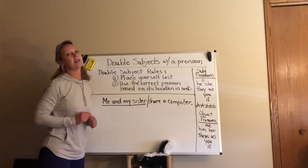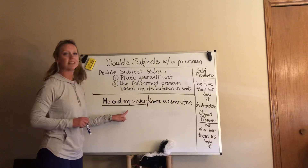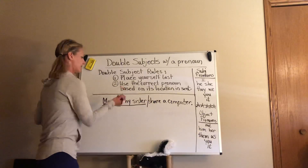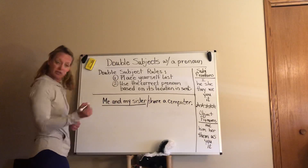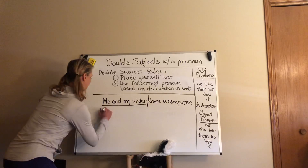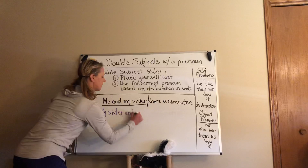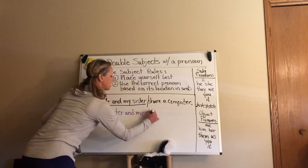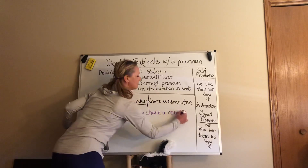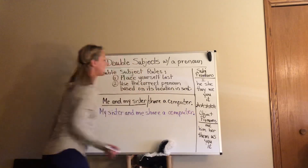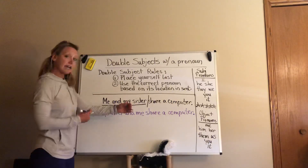Look at the double subject: 'me and my sister.' I did not follow rule number one — I put myself first instead of last. So your first inclination might be to change it to: 'My sister and me share a computer.' Now I've followed rule number one — I put myself last in the double subject.